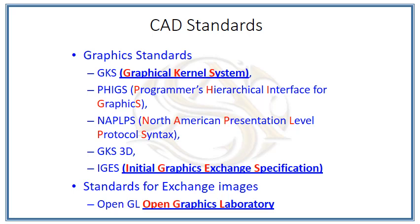These standards are subclassified into several types under graphic standards: graphic kernel system, PHIGS (programmers hierarchical interface for graphics), NAPLPS (North American presentation level protocol syntax), GKS in 3D, and IGES (initial graphics exchange specification). These all come under graphic standards, which deal with geometrical shapes like circle, line, and polygon — how they can be viewed in the system and how the system processes a line, circle, or polygon.